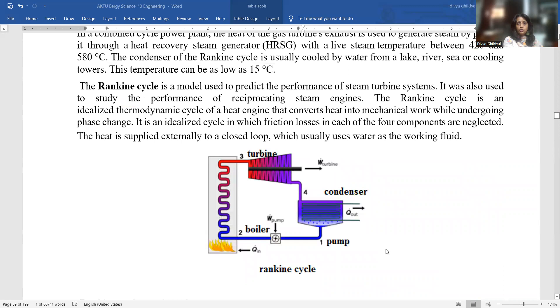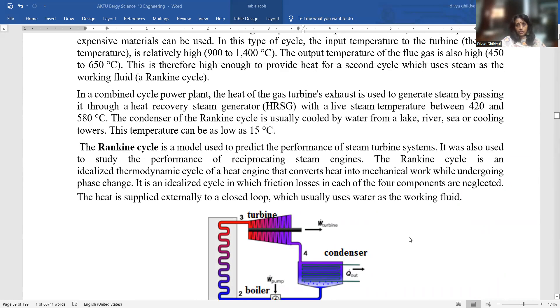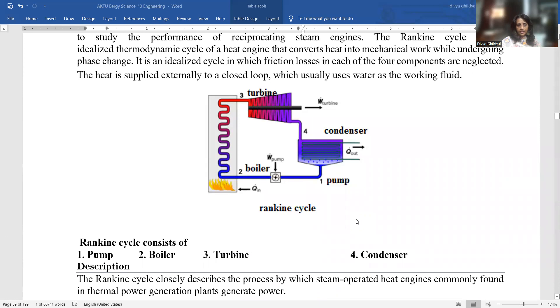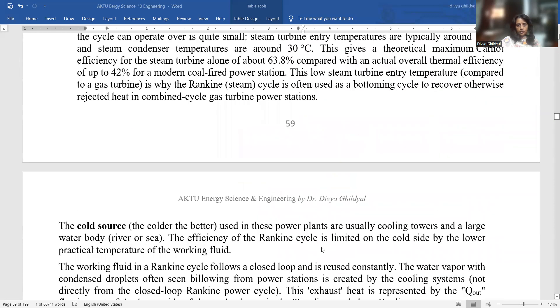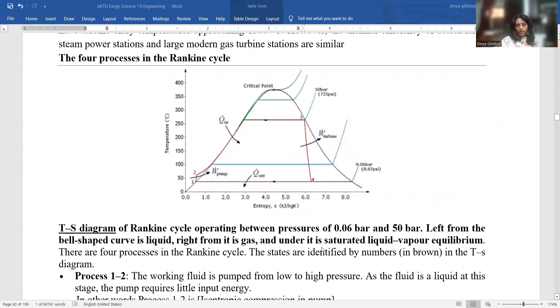Rankine cycle is a model which is used to predict the performance of steam turbine systems. It was used to study the performance of reciprocating steam engines. Rankine cycle is an idealized thermodynamic cycle of a heat engine that converts heat into mechanical energy while undergoing phase change. It is an idealized cycle in which friction losses in each of the four components are neglected. Rankine cycle consists of a pump, a boiler, a turbine, and a condenser. This is a simple Rankine cycle consisting of operating between pressures of 0.06 bar and 50 bar.